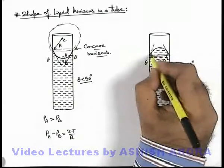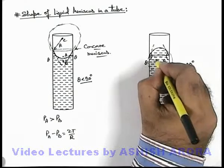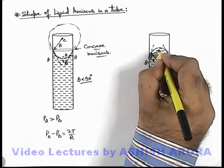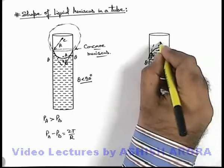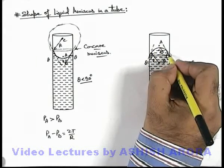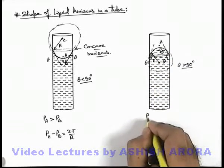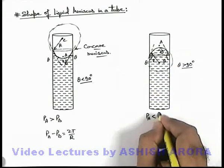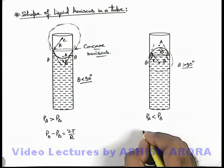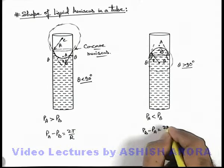Similarly in case of convex meniscus if we just draw a spherical section, and if r is the radius of curvature, here we can say inside there is point B and outside there is point A. Due to the convex nature of this meniscus we can say pressure at point B will be more than that of A. And here p_a will be less than p_b and excess pressure on the side of liquid, and here also p_b minus p_a can be written as 2T by r.